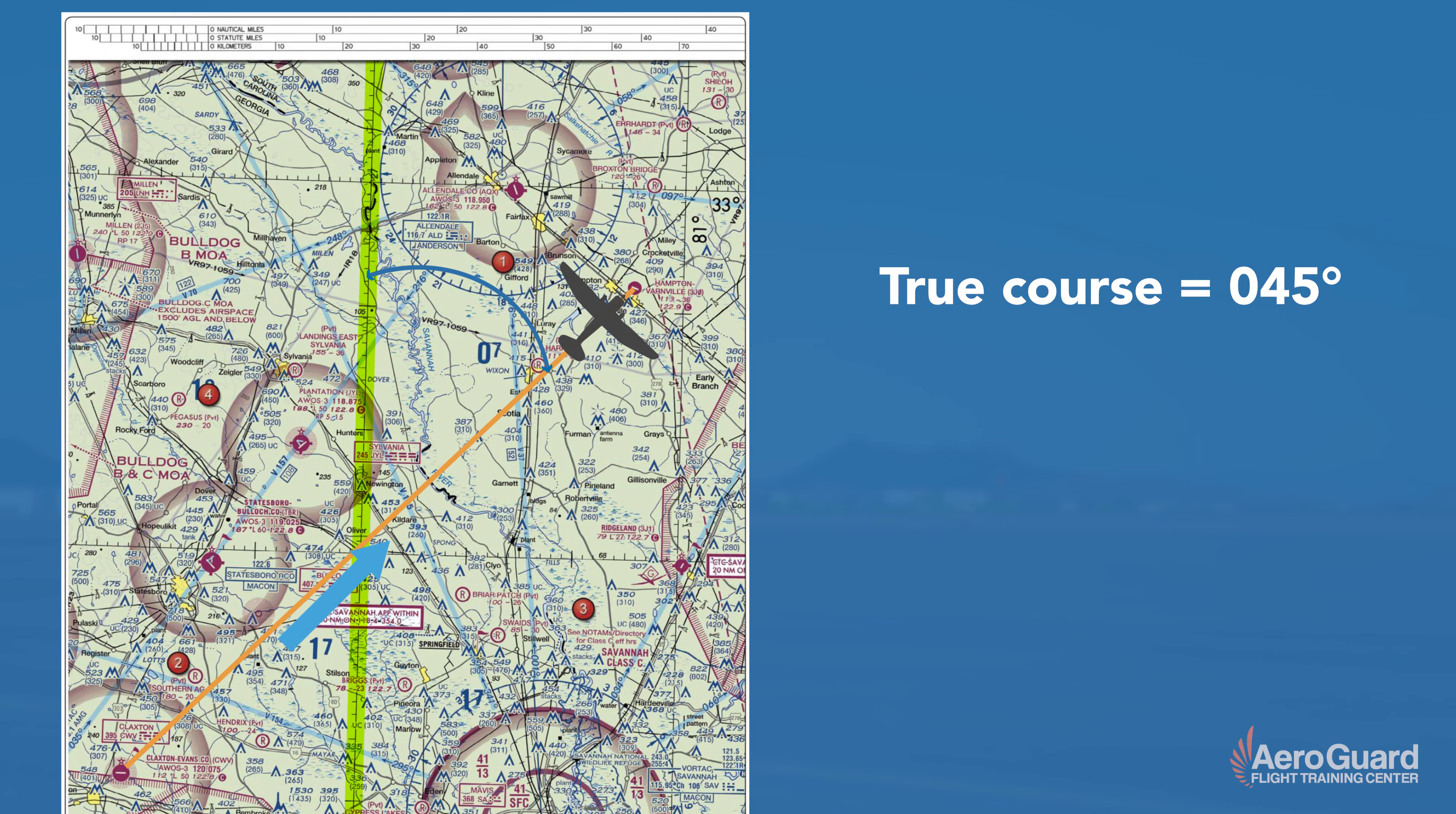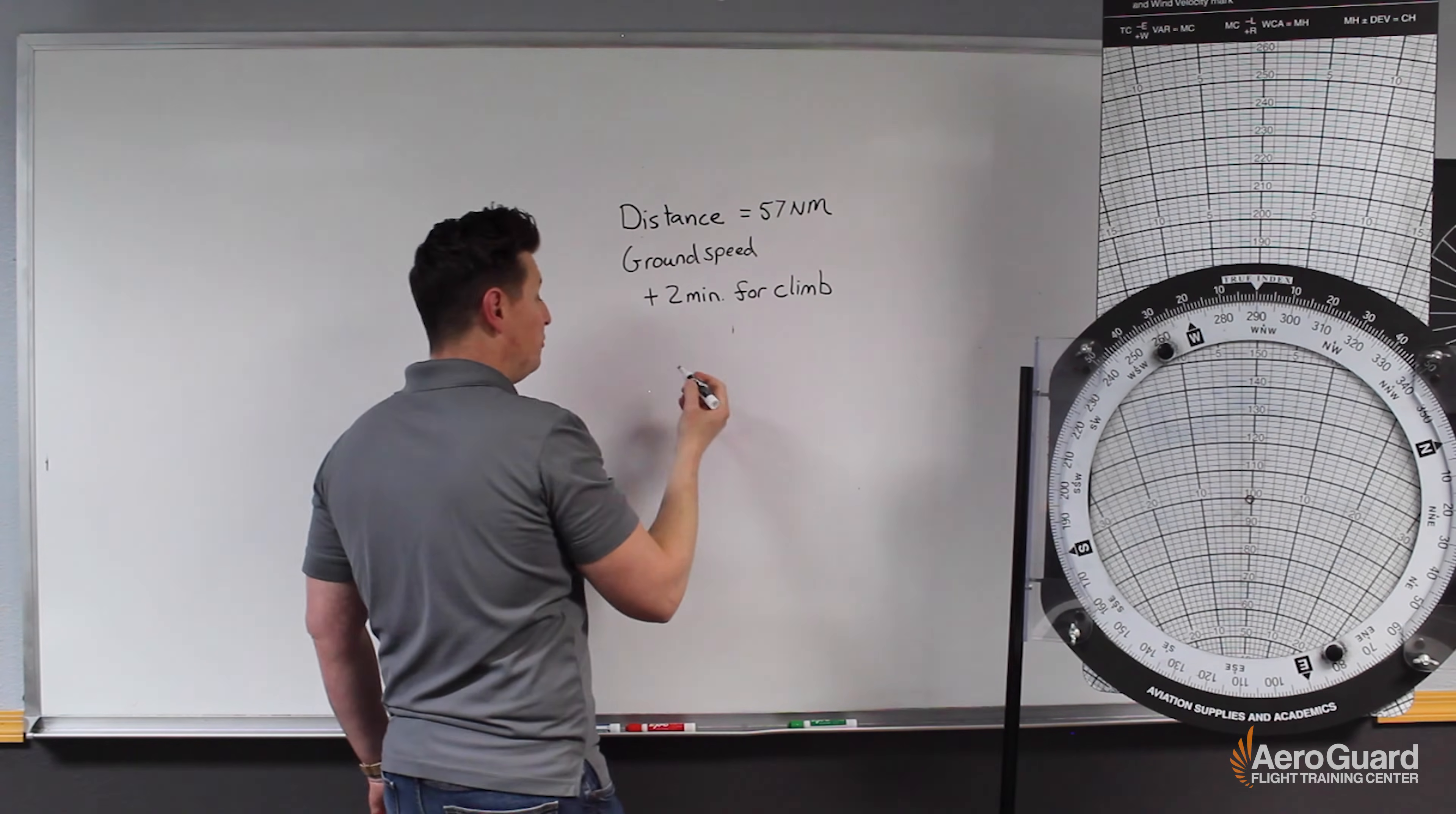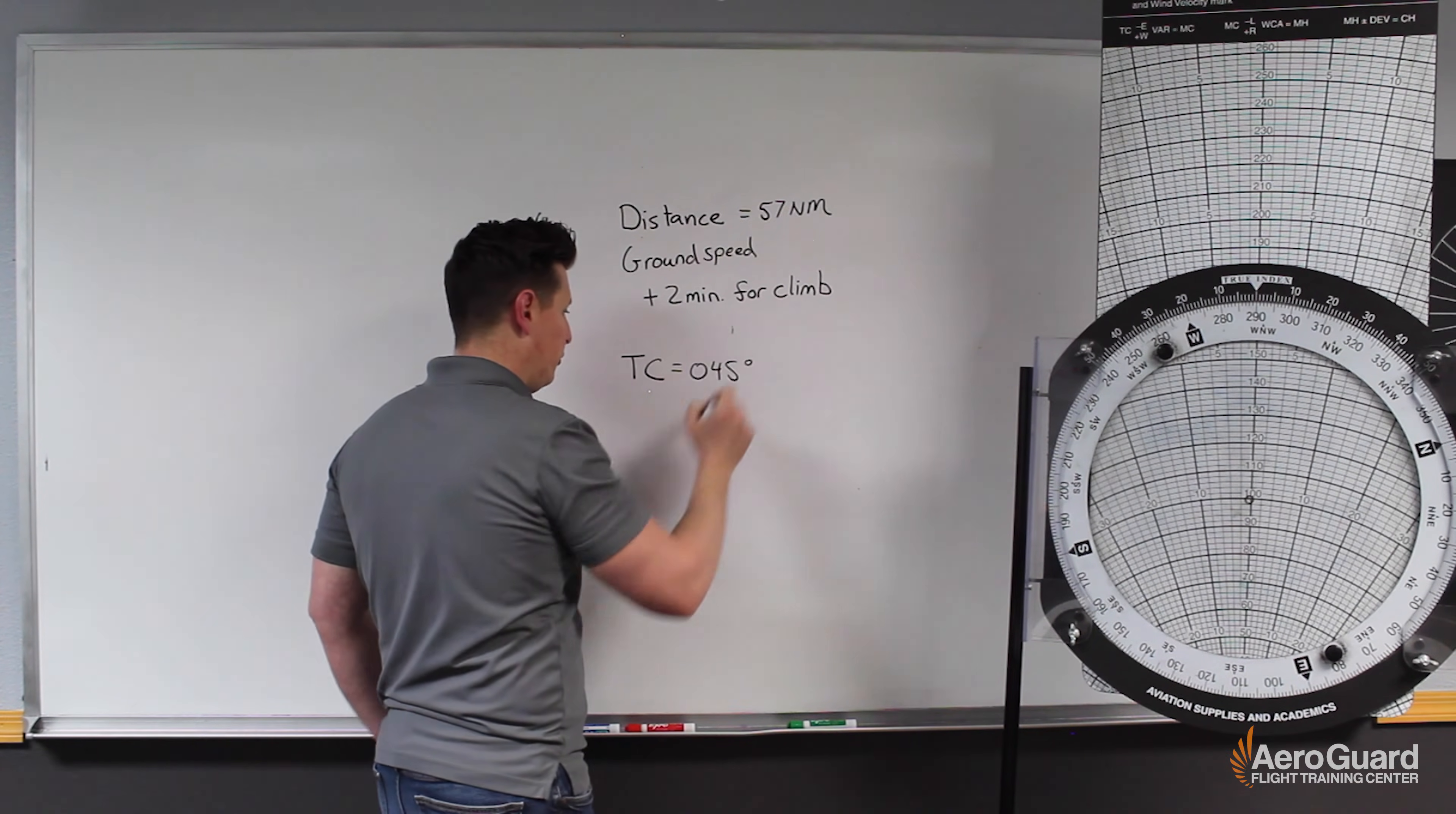We can then switch sides of the plotter and using the bottom edge of the plotter, we'll find the sectional scale because we're using a sectional chart and measure the distance. In this example our distance between the two airports is 57 nautical miles. So now we know our distance is going to be 57 nautical miles and we also learned that our true course is going to be 045 degrees.